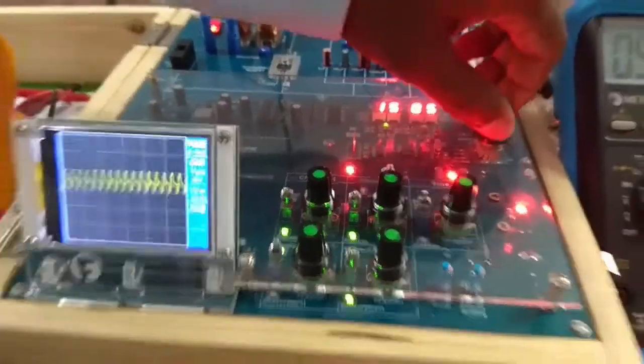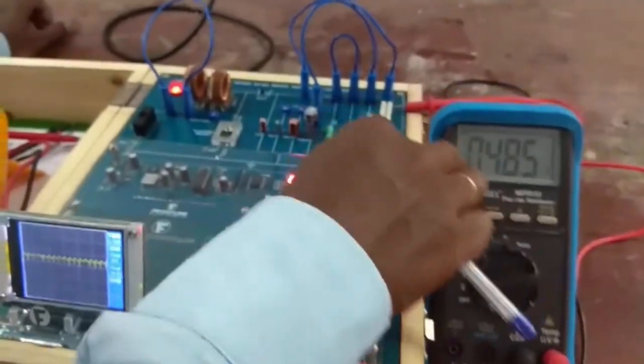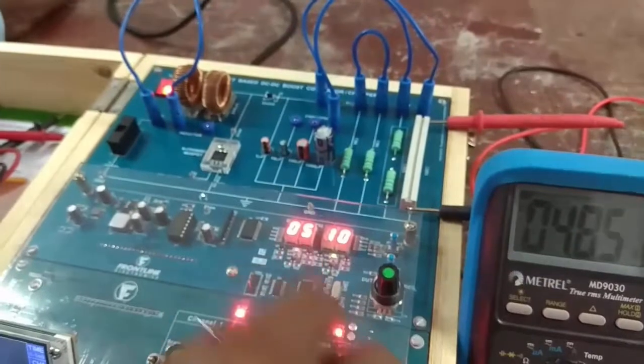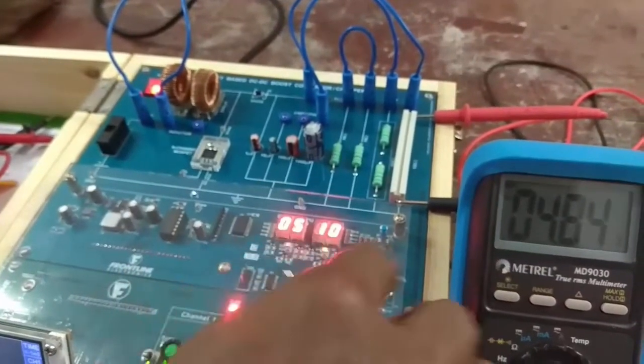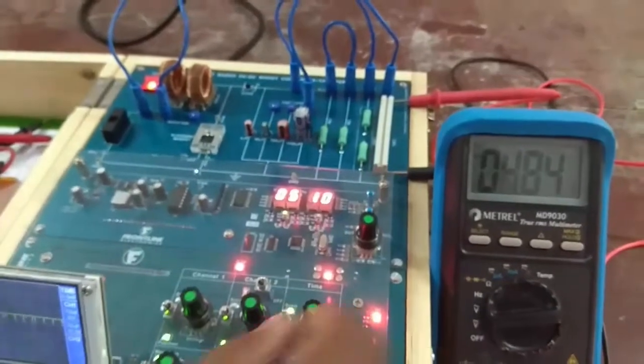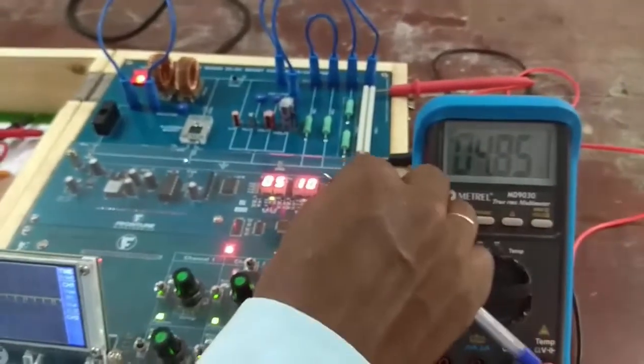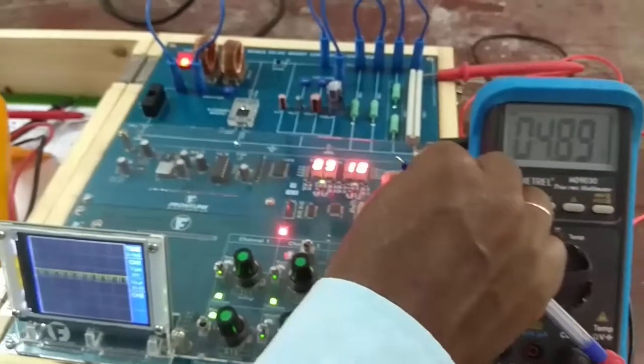We can vary the input frequency. Initially, I have taken 5 Hz. Now I move to 10 Hz. Then I will vary the duty cycle. Now look at our output voltage. It is going to get varied.